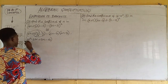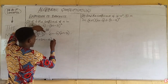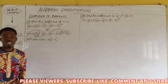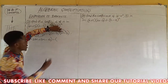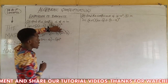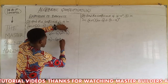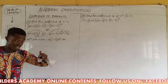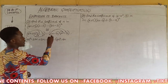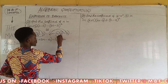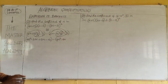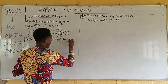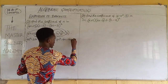We can use brackets to separate the first expansion from the second. Then minus, open bracket. For the second bracket — which is (2n minus 3) times (2n minus 3) — the first term 2n multiplies both terms in the second bracket. So 2n times 2n gives us 4n squared, and 2n times minus 3 gives us minus 6n. Then the second term minus 3 multiplies both terms: minus 3 times 2n gives minus 6n, and minus 3 times minus 3 gives plus 9.